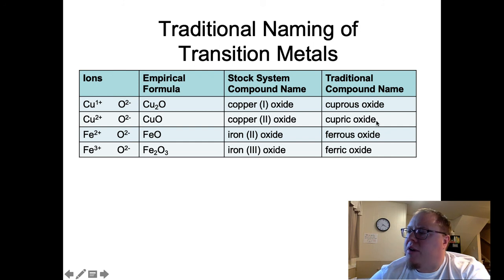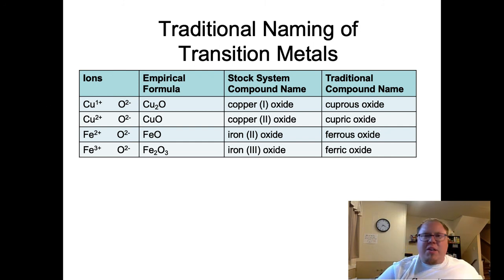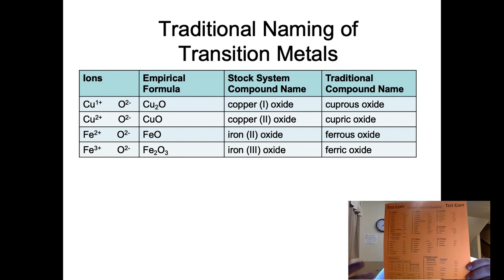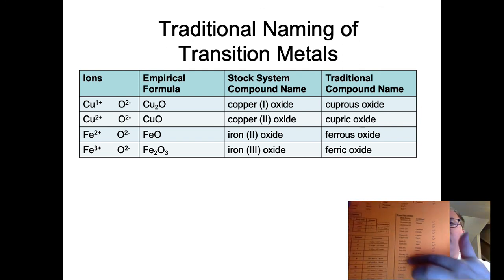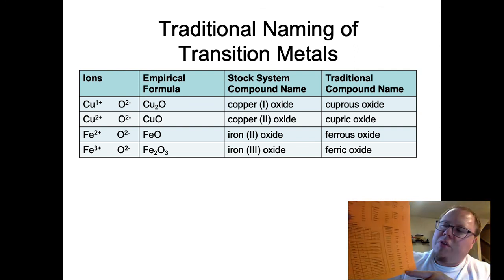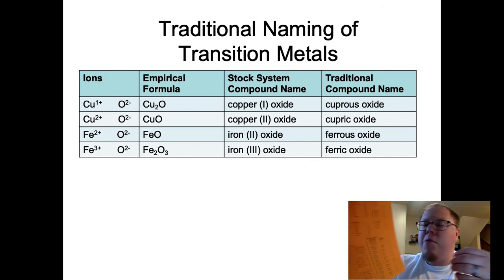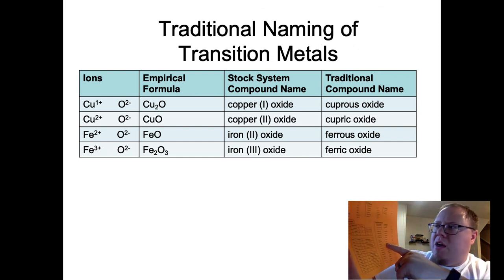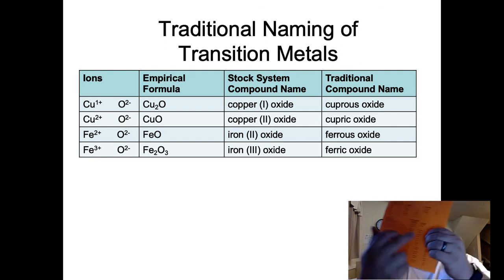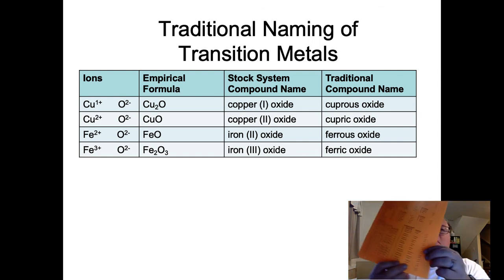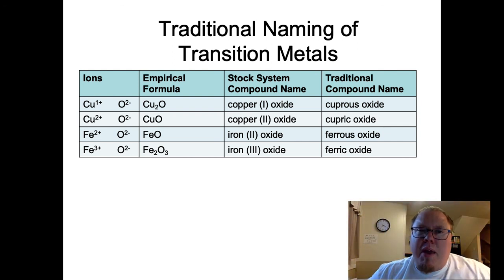I'm going to make sure you have a chart with these - download the common ions chart. You can print it or keep it on your computer - it's a reference chart you're allowed to use. At the bottom is where all these transition metals are listed with their stock name including the Roman numeral, and right next to it the traditional old-timey name. For example, gold 1 is aurous and gold 3 is auric. If you can figure out what the Roman numeral name is, I'm giving you a chart with these traditional names. Make sure you download that, print it off, and keep it handy. That's it for today.